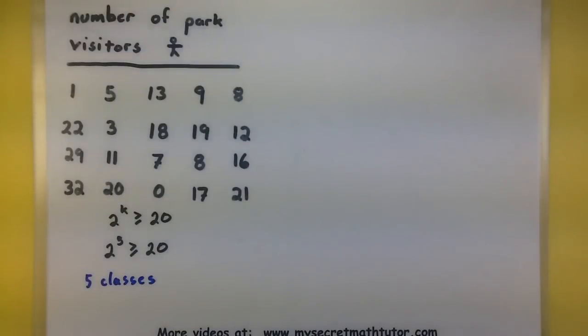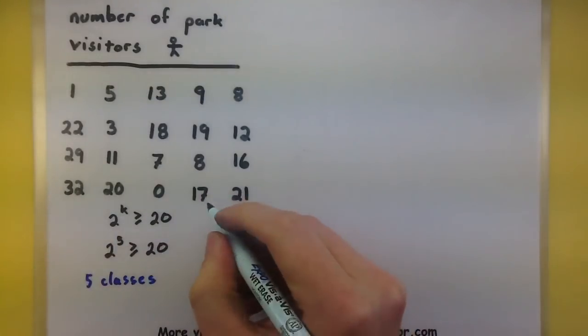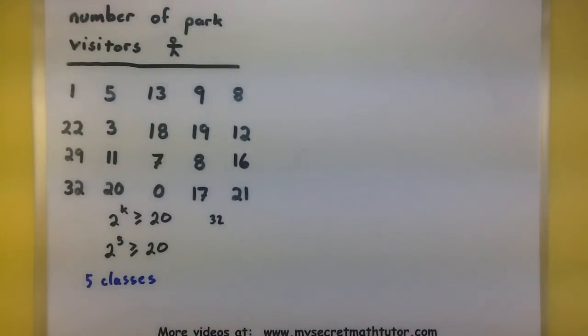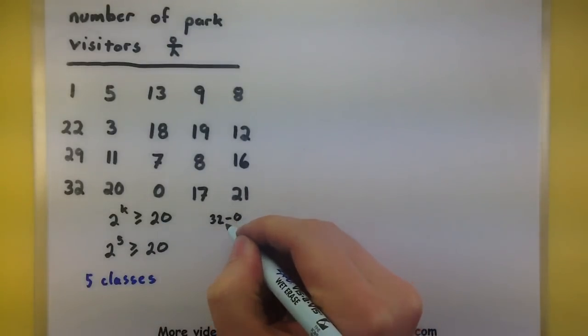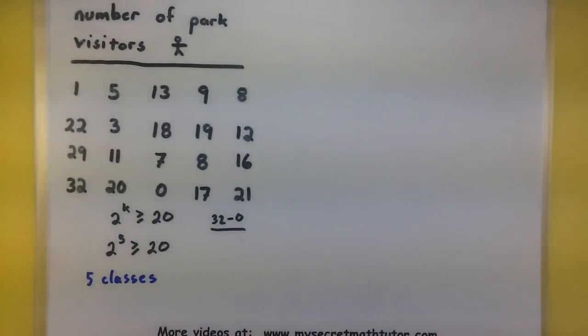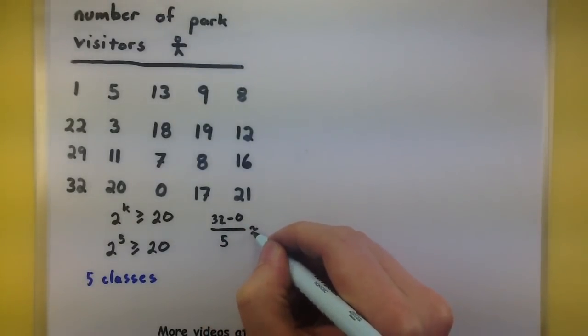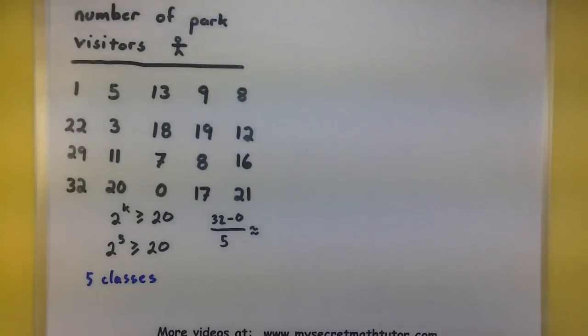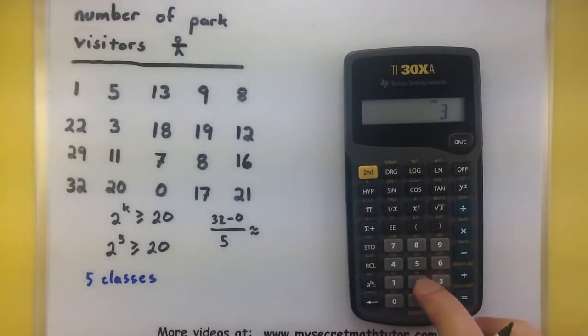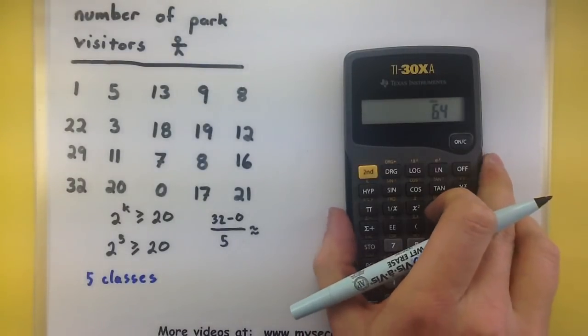Now of course that's only half of the story. We also want to figure out how big to make each of these classes. So let's take this further by taking our largest data value, 32, and subtracting our smallest data value, in this case 0. We'll divide that by the number of classes, 5. 32 minus 0, divided by 5, equals 6.4.